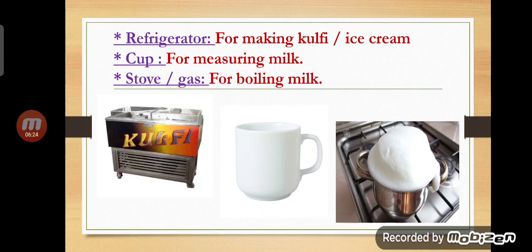Children, we have completed chapter number nine. It is a small lesson on the requirement list for making milk and milk products. I hope you enjoyed the lesson and learned about the uses of different objects for making milk and milk products. Thank you, stay safe.